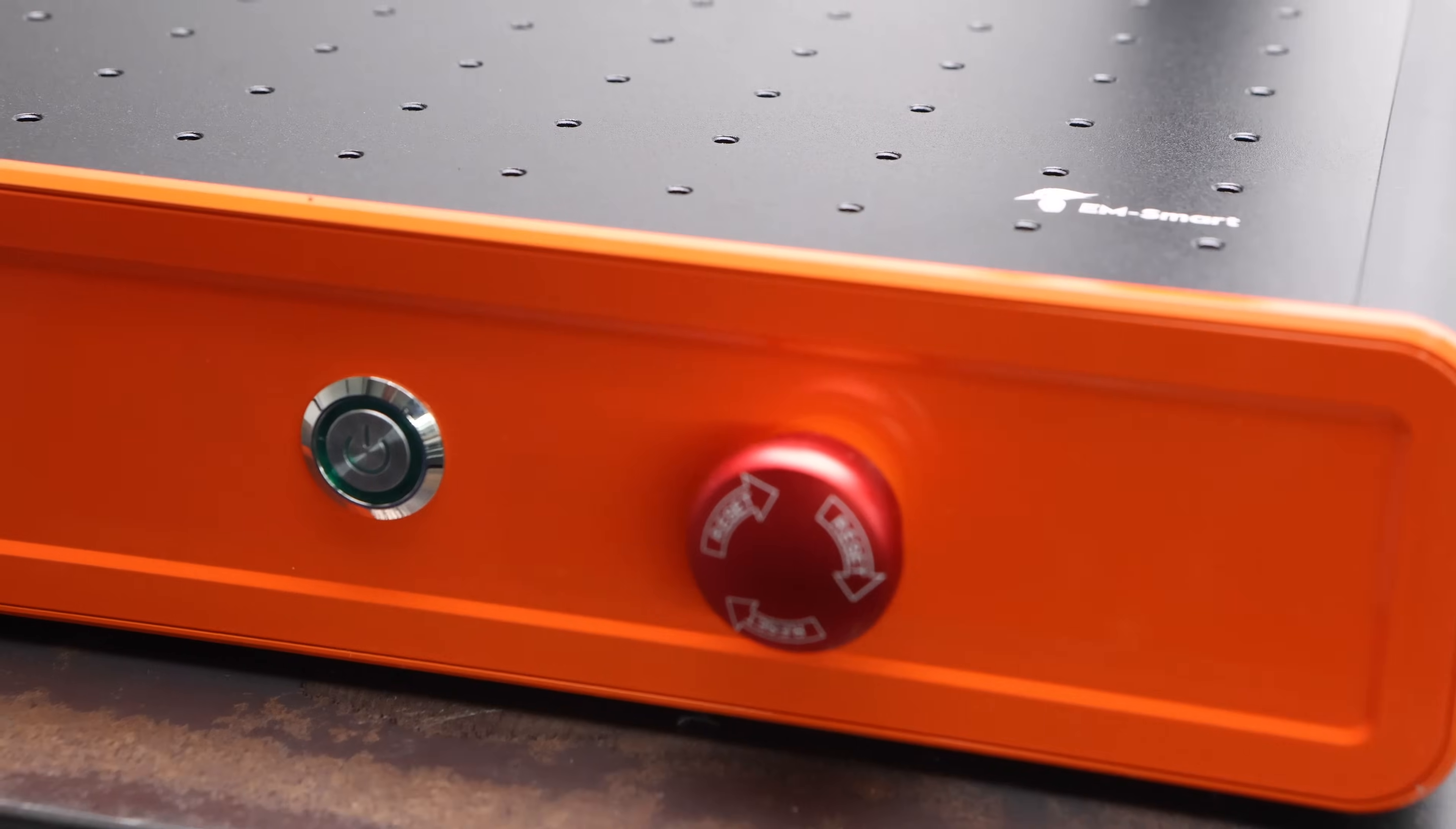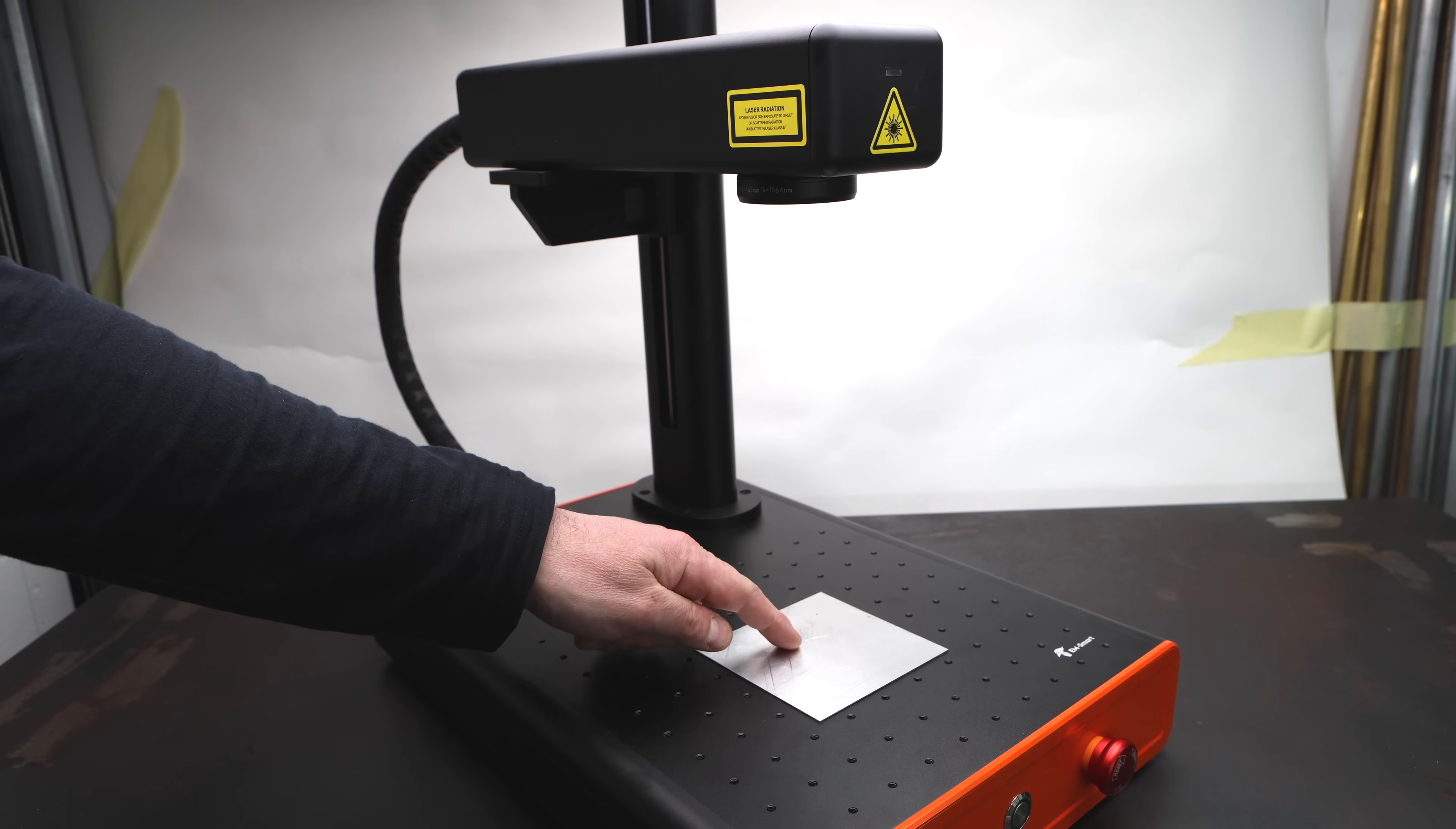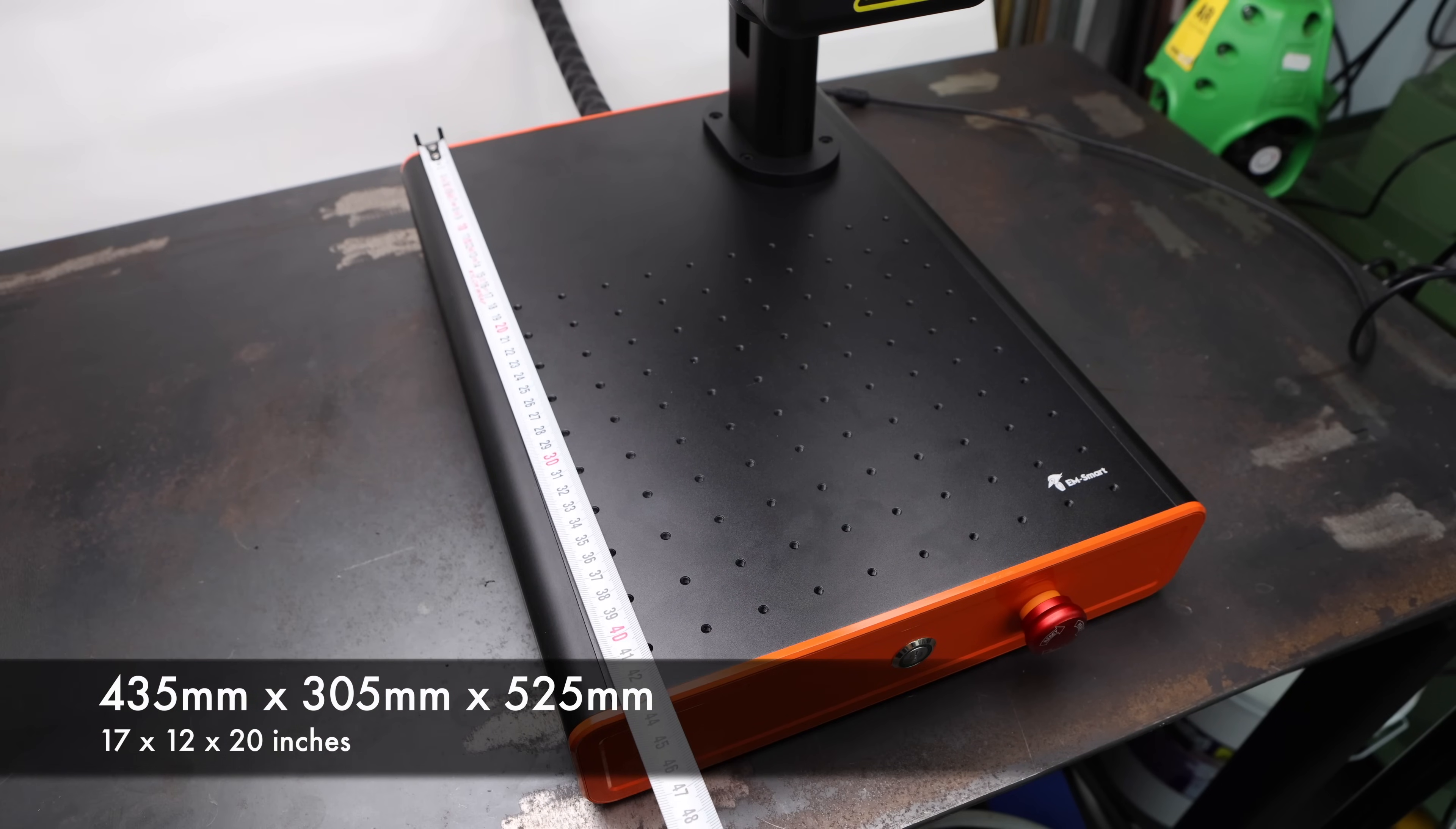So let's start by taking a look at the machine itself. The model is the EMsmart Basic One and it's a 20 watt fiber laser. The laser source lives in the base here. It's transmitted through a fiber optic cable to the head where the beam is directed out of a lens onto the workpiece below. It's got a solid all metal construction weighing in at 11.5 kilos and it's got a reasonably small footprint at 435 by 305 by 525 millimeters.